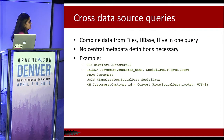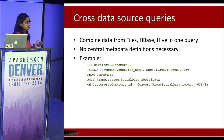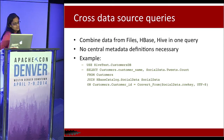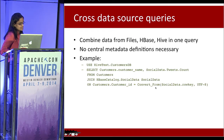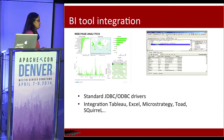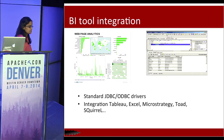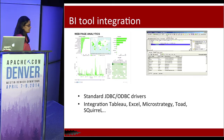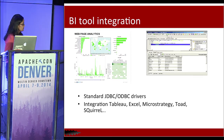Cross data source queries are a natural side effect of Drill's decentralized metadata model. You can combine data from files, Hive, and HBase in a single query — for example, joining customer database data with social data from HBase without defining anything up front. For BI tool integration, Drill provides JDBC and ODBC drivers. Drill has its own RPC format with a C++ client API used to build the ODBC driver. You can use it from Excel, MicroStrategy, Tableau, or Squirrel.